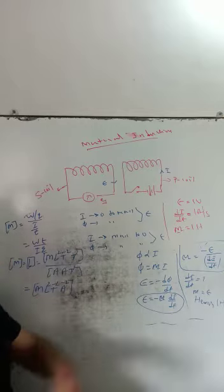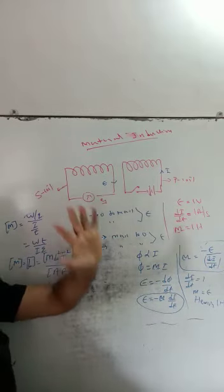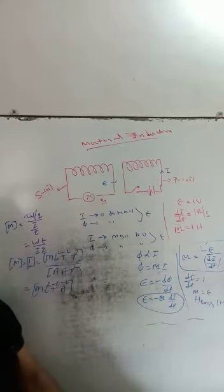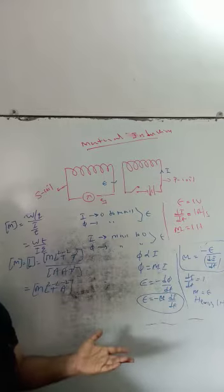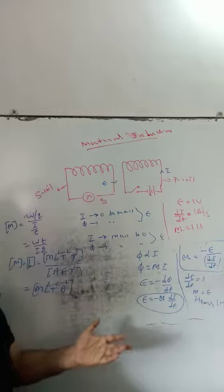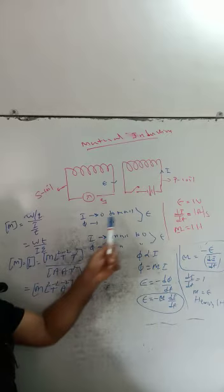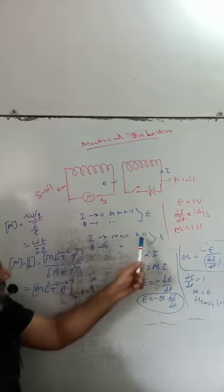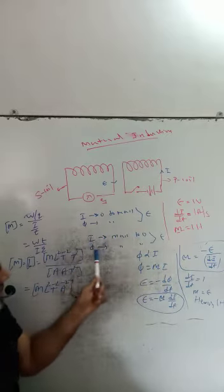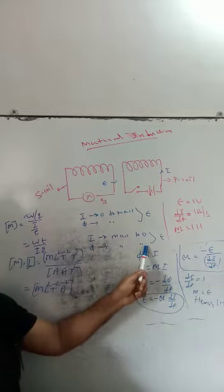When current changes in one coil and EMF is induced in another coil, that is mutual induction. If the current increases, the magnetic flux increases. If the primary coil current decreases, the secondary coil magnetic flux decreases.